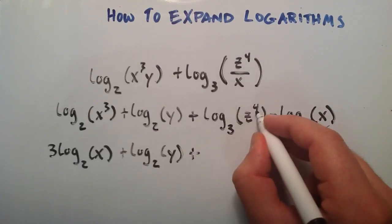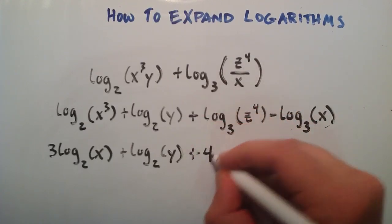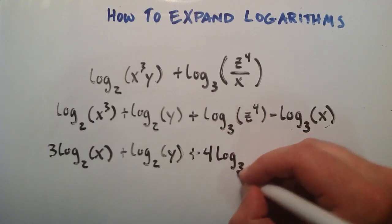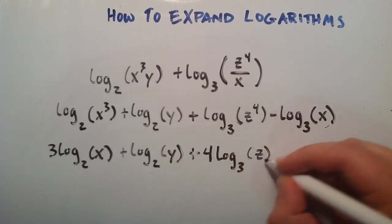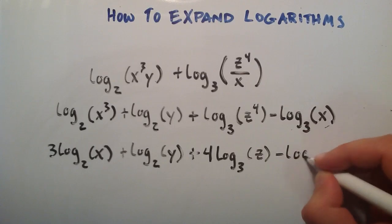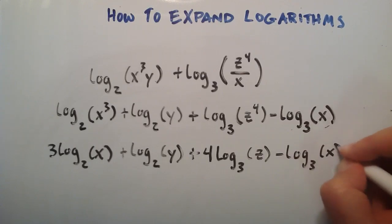And here we can bring the 4 out front. This becomes plus 4 log base 3 of z. And minus our final term, log base 3 of x, stays the same.